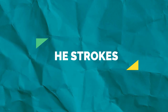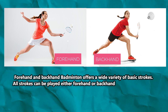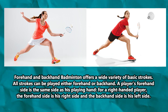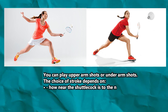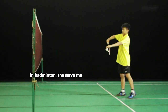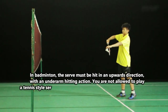The strokes: Badminton offers a wide variety of basic strokes, and all strokes can be played either forehand or backhand. A player's forehand side is the same side as his playing hand. For a right-handed player, the forehand side is his right side and the backhand side is his left. You can play overhead arm shots or underarm shots. The choice of stroke depends on how near the shuttlecock is to the net, how high the birdie is, and the current position of the opponent.